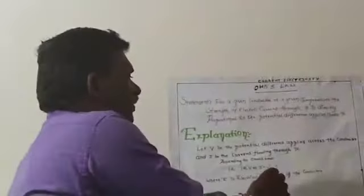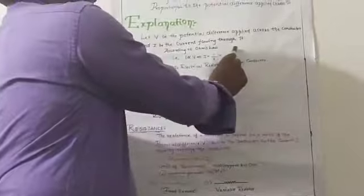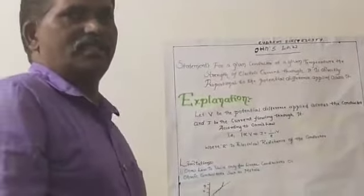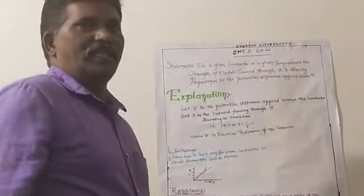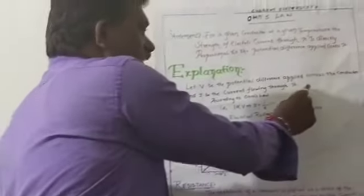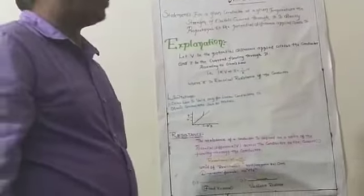If you see this graph — if you plot the graph between current and voltage, taking current on the y-axis and voltage on the x-axis — since voltage is proportional to current, it represents a straight line. This straight line passes through the origin.